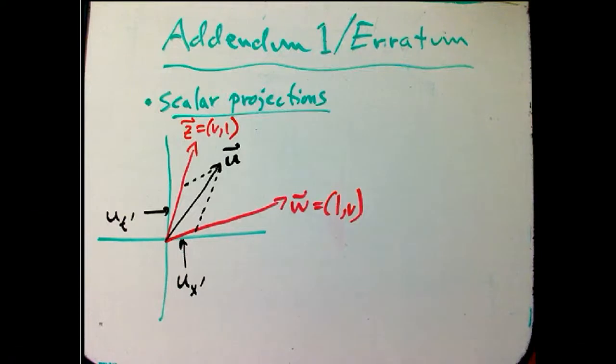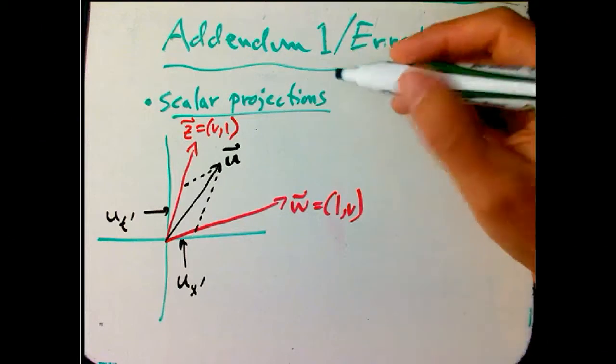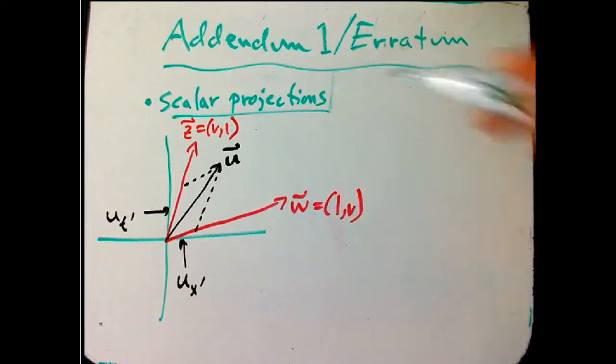Someone helpfully pointed out a significant sign error that I made in part 15, and it carries over into part 16 as well. The big sign error I made was just forgetting how to do the Minkowski scalar product, thinking too closely about the analogy with Euclidean geometry. But in fixing it, I realized that there's something else I should say about scalar projections.